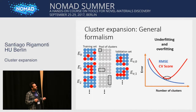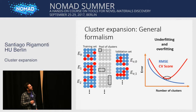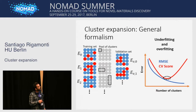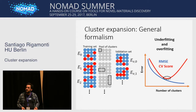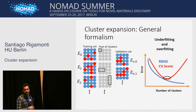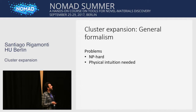We should look at all possible cluster sets that minimize this quantity. This cross-validation score can detect what is called overfitting. If we have a small number of clusters, the root mean square error will be high because the fitting is not good. If we increase the number of clusters, the root mean square error will go down because our model has more parameters and can fit better and better. However, at a certain point the cross-validation score will start to increase again — this is the overfitting. There is a point when we reach a minimum that gives us the optimal set of clusters.